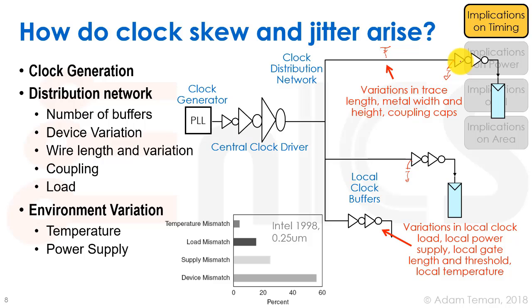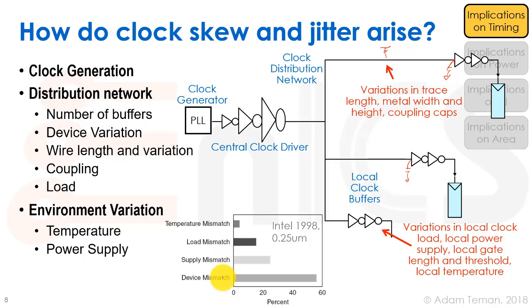Here's a graph from Intel — from 1998 in a 0.25 micron process — mapping out sources of skew and jitter. It shows skew was mainly due to device mismatch. This is system-dependent, but it's a typical example of what you might find, though it really depends on your specific chip.